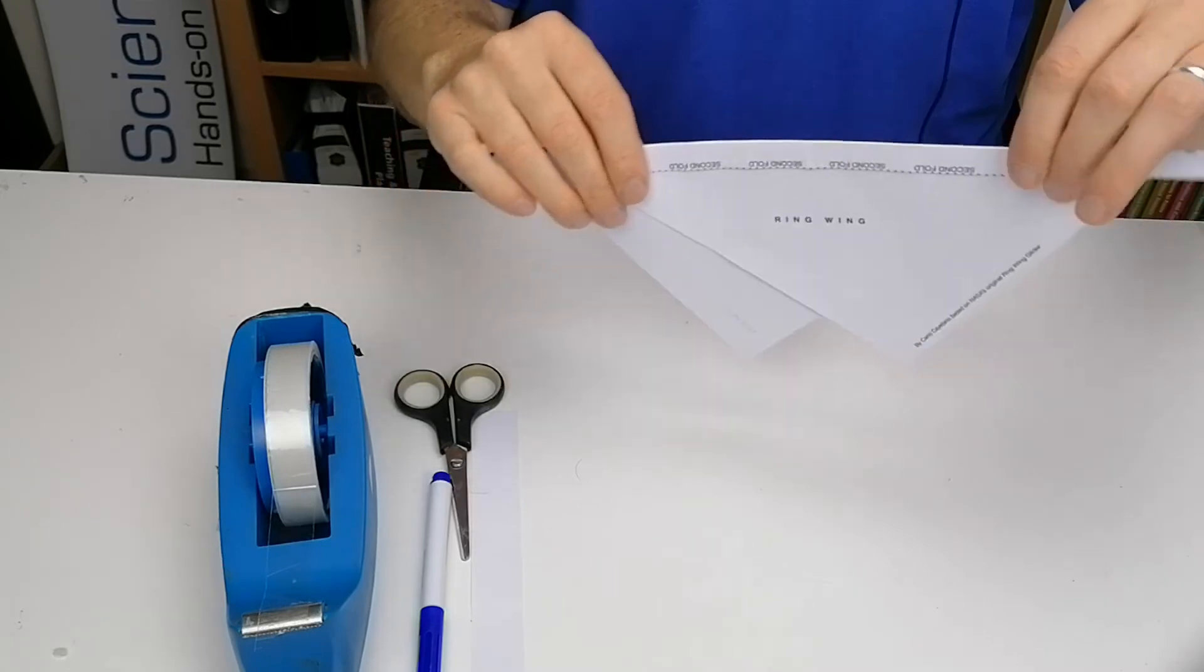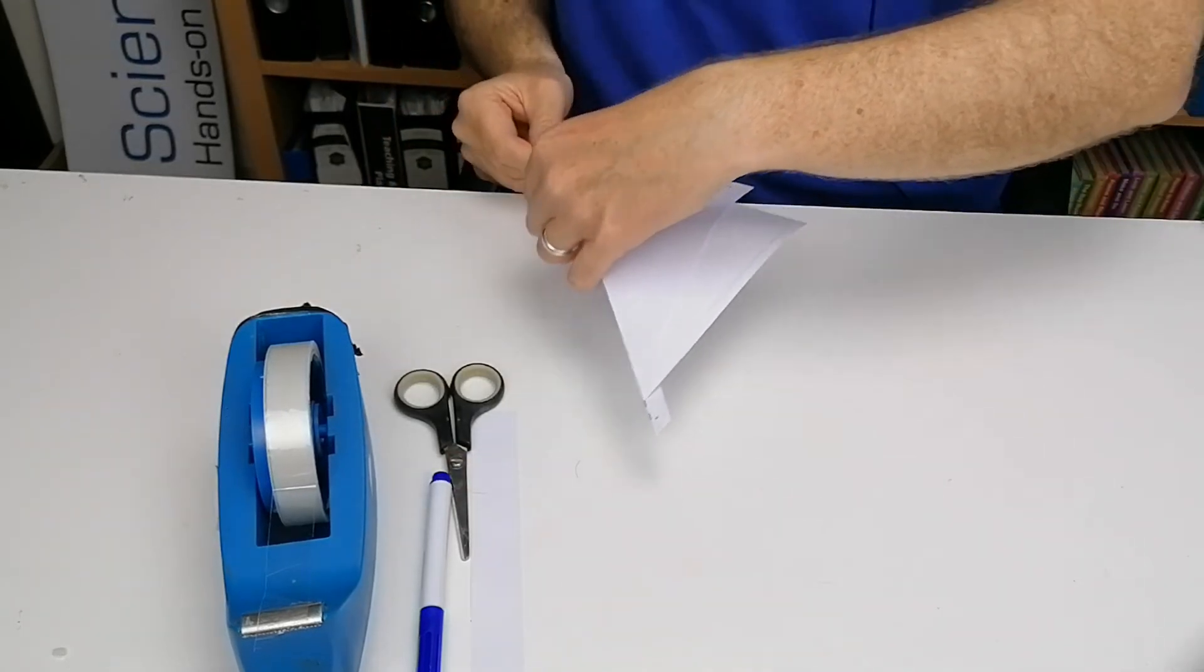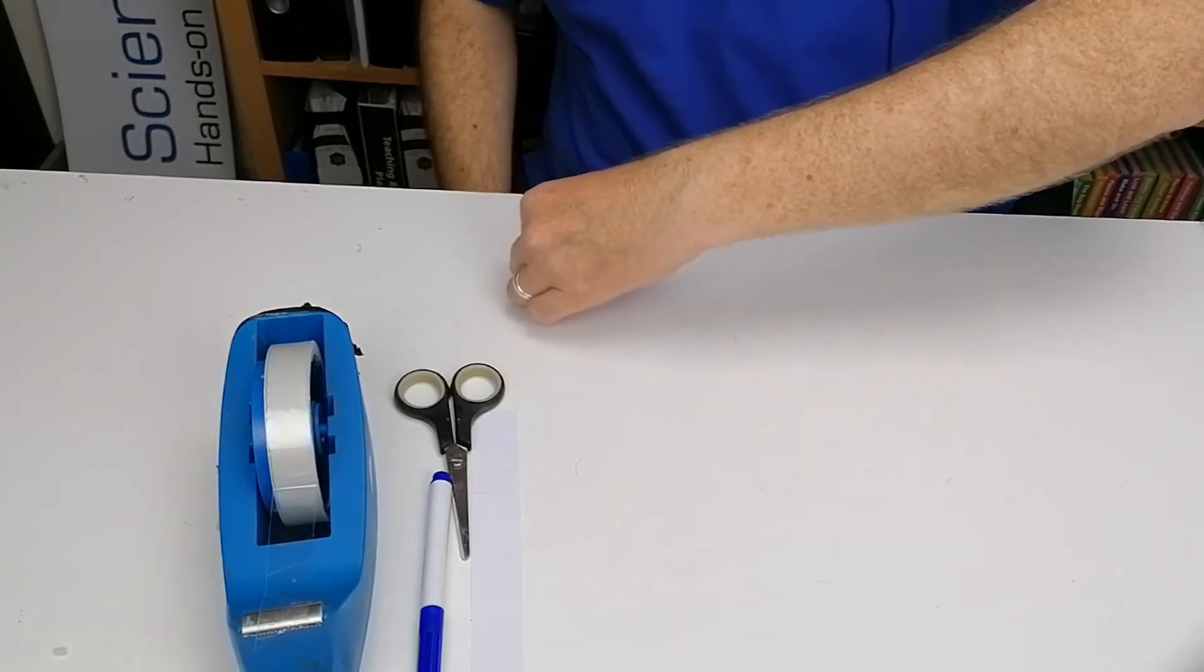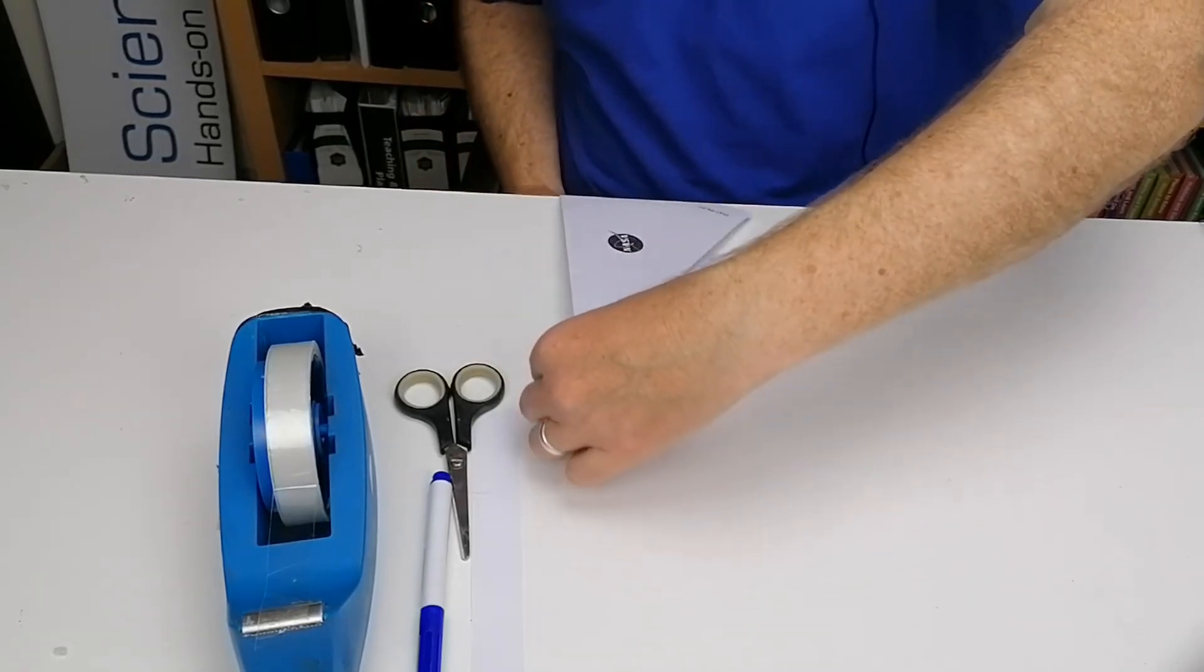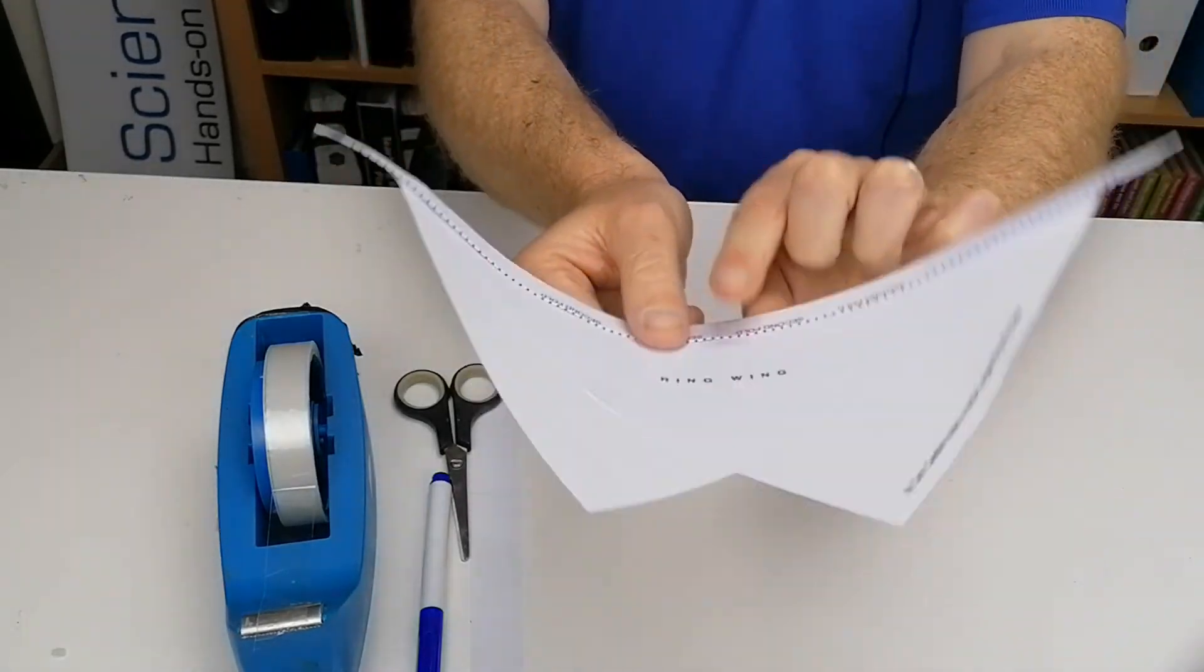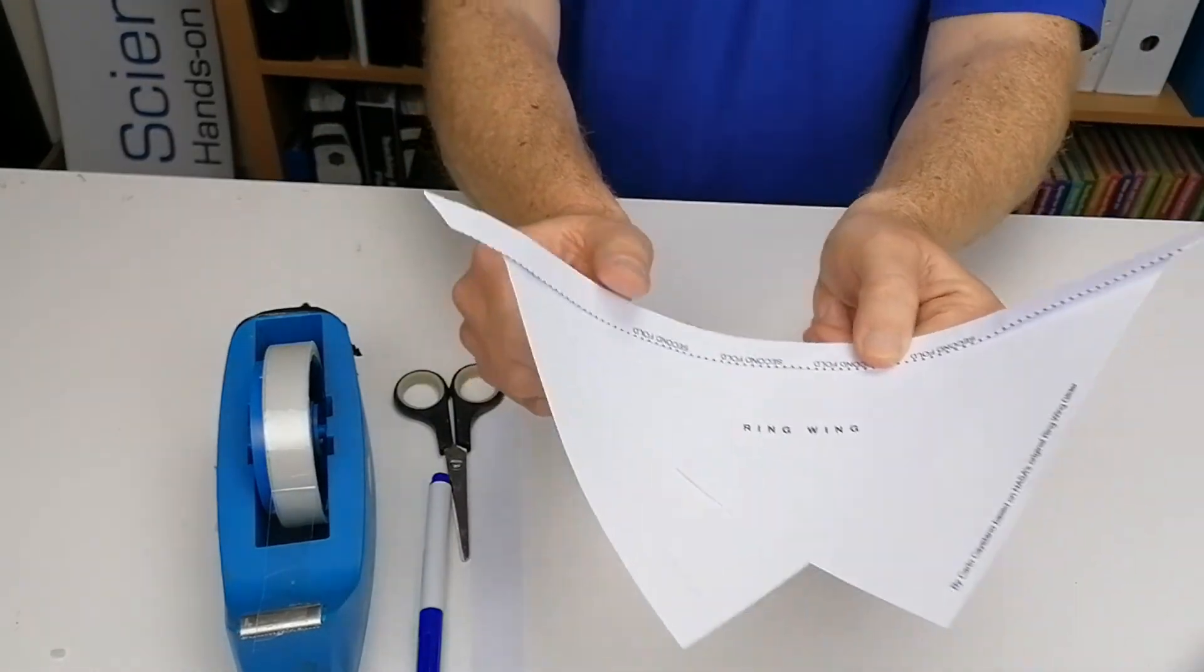I just want to show you how to get that curve. So if you take the ring wing template and you just pull this side while holding this side along the edge of the table, that will make the paper curved like that. That's what you want. You want this curved shape.